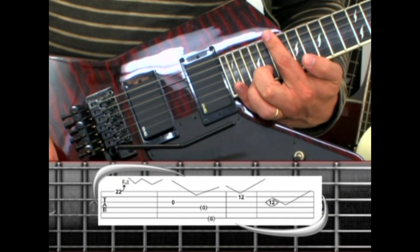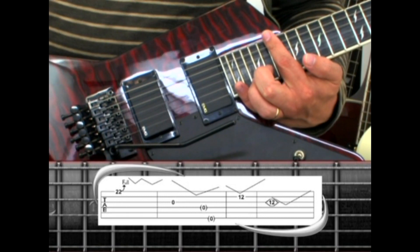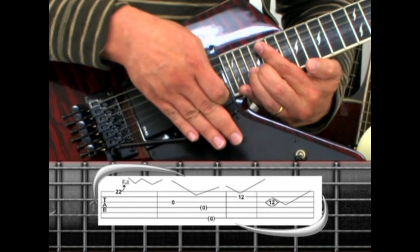The first example is a first string bend on the 22nd fret while rapidly depressing the bar.